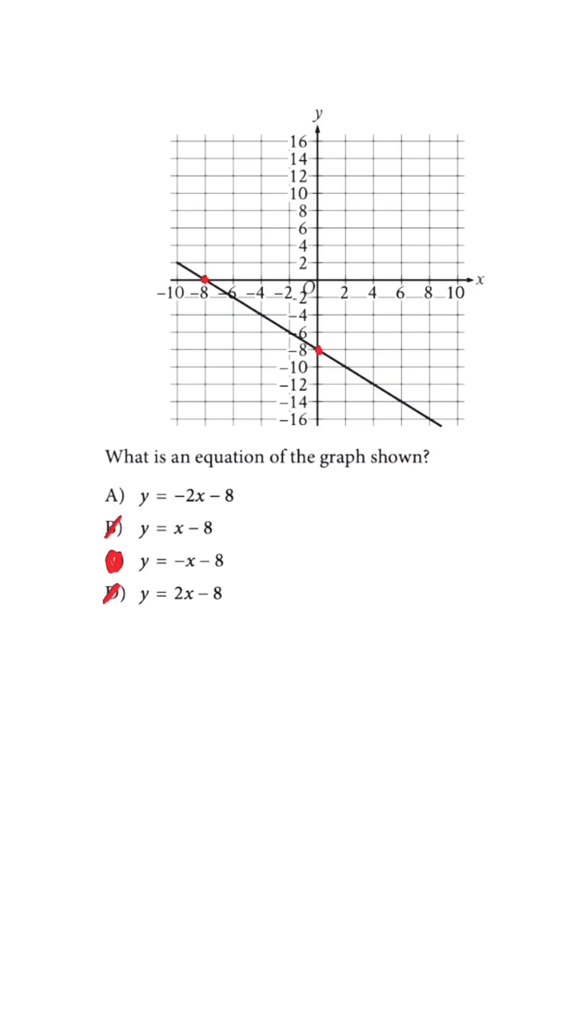Now let's say we use these ordered pairs, negative eight, zero, and zero, negative eight to double check.